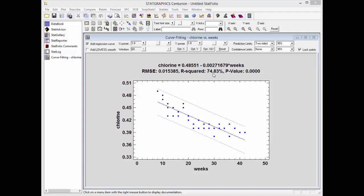You see the R squared statistic, which is currently 74.83%. That's a measure of how well the model fits the data. The higher the better. And you see a p-value. Any p-value less than .05 would indicate a statistically significant fit.